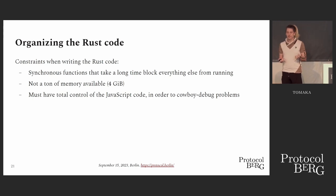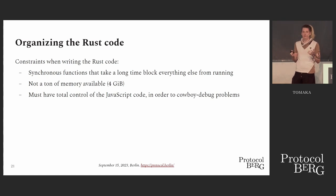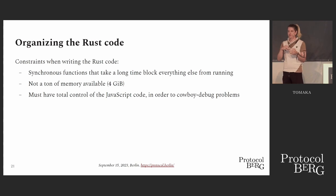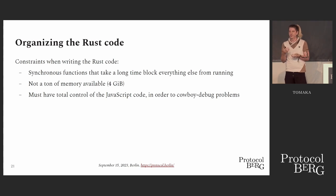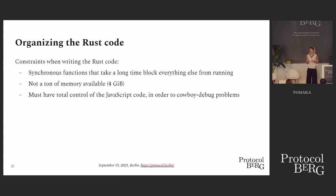Other constraints: there's not a lot of memory available — that's the WebAssembly constraint for right now. And because JavaScript is single-threaded, you cannot have functions that take a long time individually. You don't want to spend two seconds verifying something, because during those two seconds nothing else happens — no networking messages. Any function needs to return very quickly.